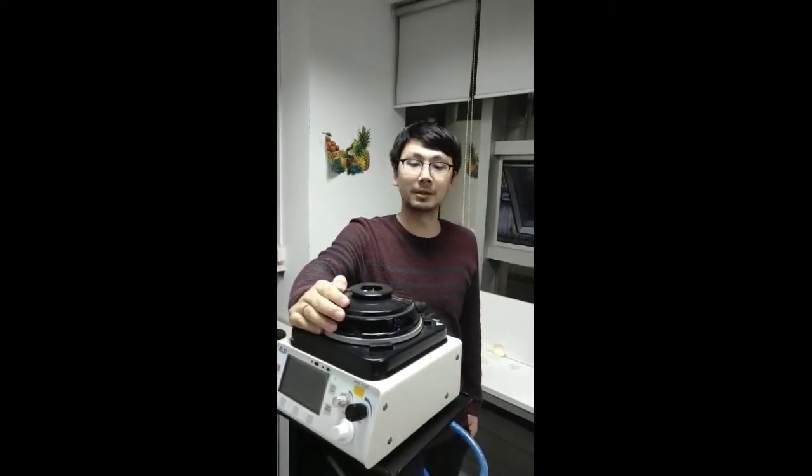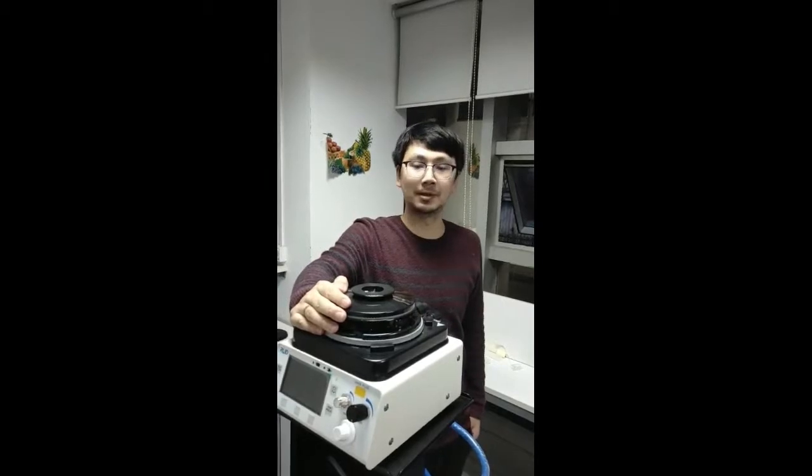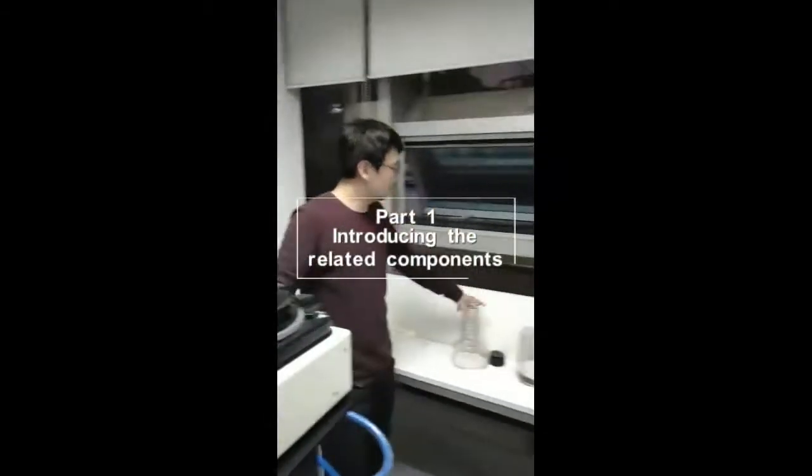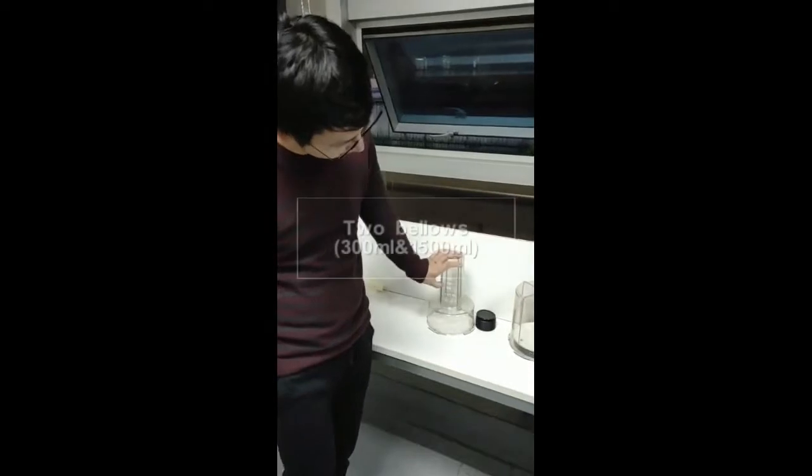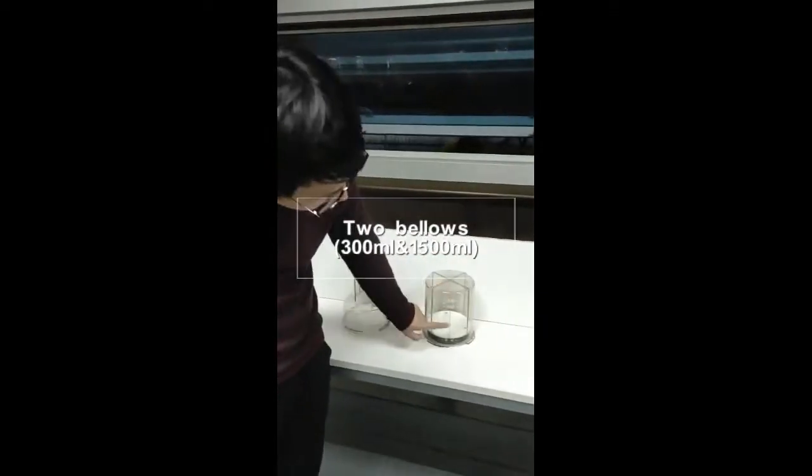Hi, now I am going to introduce how to set up the ventilator R409+. For this ventilator we have two bellows, one is from 0 to 300, another is from 300 to 1500.